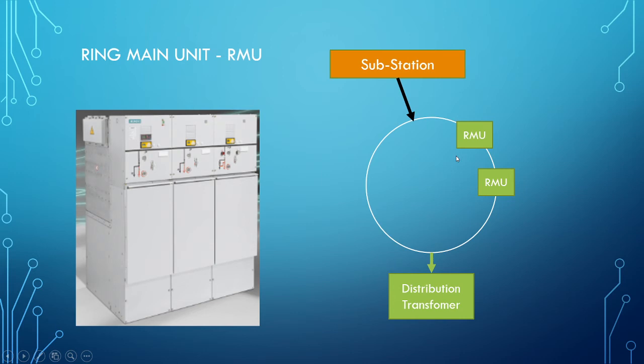At any case, we get the power continuously. This way, we get the redundancy of the power. This is the purpose of this ring main unit system. And I hope you understand about this ring main unit.